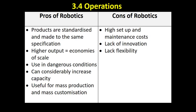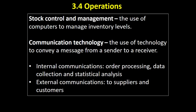Robotics are useful for mass production and mass customisation. On the other hand, robotics are high cost to set up. They can lack innovation — they don't come up with ideas — and they can lack flexibility; they need to be reprogrammed and reconfigured if you want to change the production line.